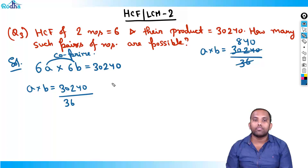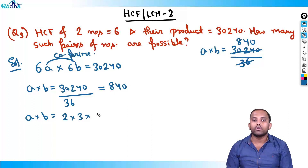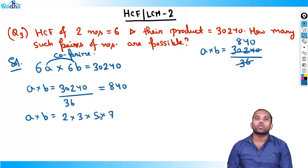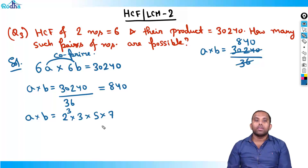So a into b becomes 840. Now what is 840 in terms of prime factors? Its prime factors will be 2, 3, 5 and 7. Because 84 is 12 into 7, so it contains 3, 7, 2, and it's also a multiple of 5. The power of 2 will be 3. So a into b equals 2^3 × 3 × 5 × 7.